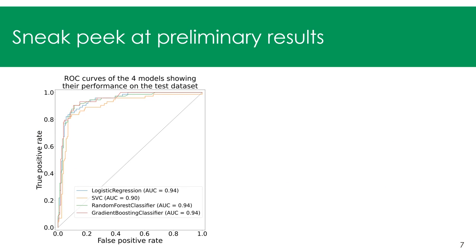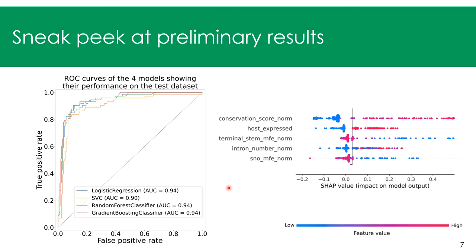For the preliminary results, we can see the performance of the four models I trained using ROC curves — they are all highly accurate and performant. For the gradient boosting classifier specifically, its five most important predictive features show that conservation seems to be the most predictive feature and probably an important abundance determinant for SNORNAs. With that, I'd like to thank you for your attention and I'll be happy to take any questions.